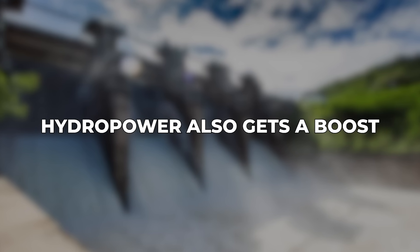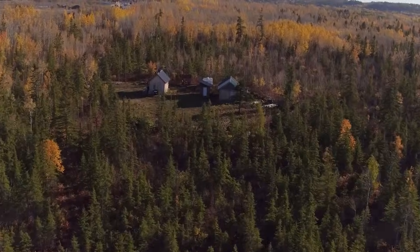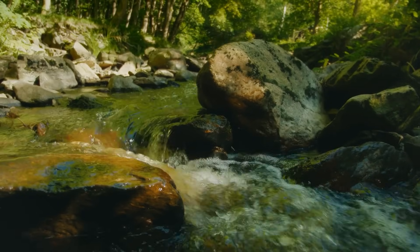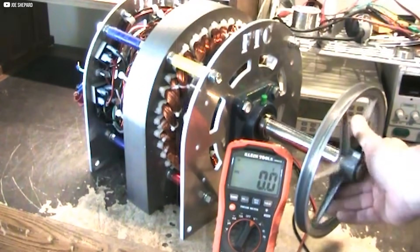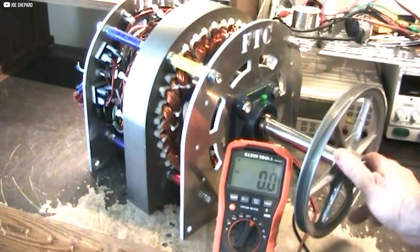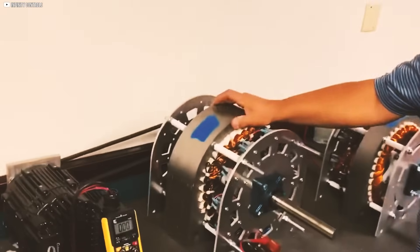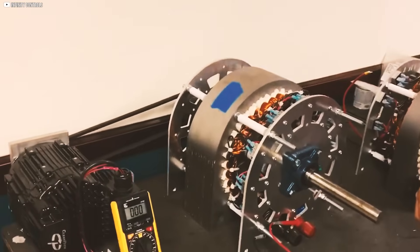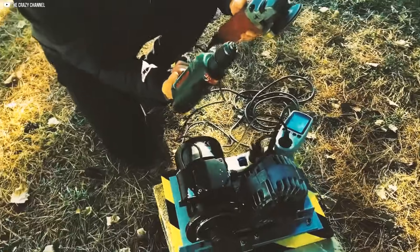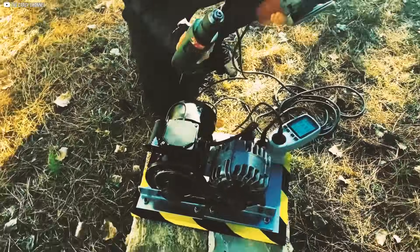Hydropower also gets a boost. In off-grid or remote regions, even a gentle stream can be turned into a viable power source when paired with the iGenerator. Thanks to its zero-cogging design and high efficiency, it excels in low-flow, low-head water systems where traditional generators fall short.